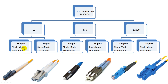Both LC types have single-mode and multi-mode fiber versions available. The next major type is the MU connector. The MU connector looks like a miniature SC connector and is also available in simplex (single fiber) and duplex (two fiber) versions. Both simplex and duplex also have single-mode and multi-mode fiber versions available.